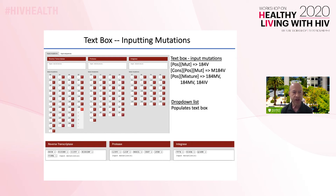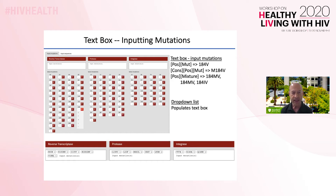Selecting mutations from the drop-down list is optional because most clinicians will be copying mutations from a genotypic resistance test report. If a mutation is selected using the drop-down list, it will immediately appear in the text box. The bottom part of this slide contains a sample list of entered mutations for RT, protease, and integrase that we will be using for the following slides.